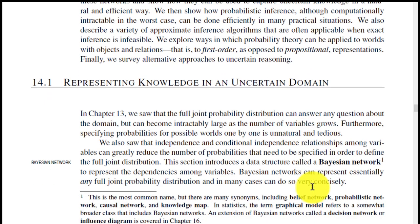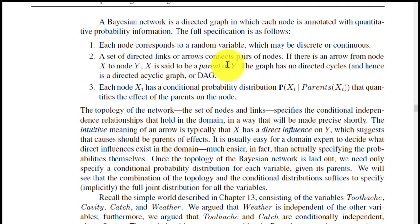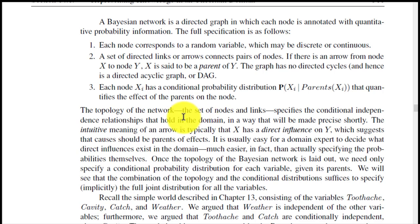A Bayesian network is a directed graph in which each node is annotated with quantitative probability information. Each node corresponds to a random variable, which may be discrete or continuous. A set of directed links or arrows connects pairs of nodes. If there is an arrow from node X to node Y, X is said to be a parent of Y. The graph has no directed cycles and hence is a directed acyclic graph or DAG. Each node Xi has a conditional probability distribution P(Xi | parents of Xi) that quantifies the effect of the parents on the node.